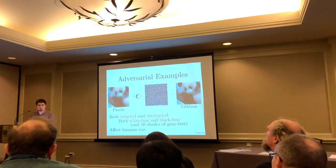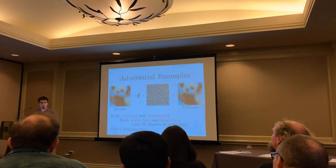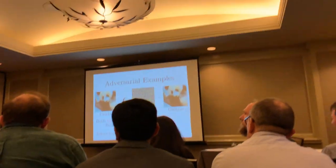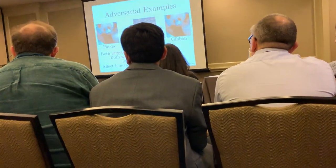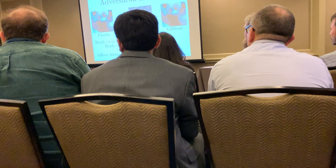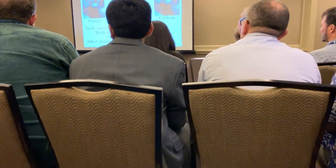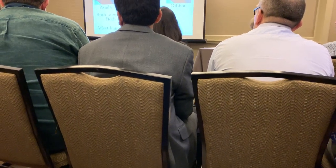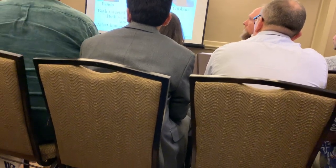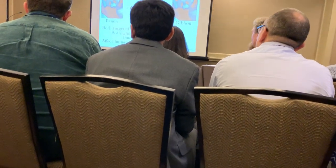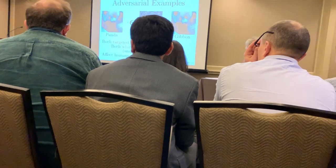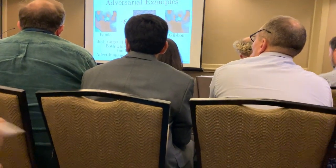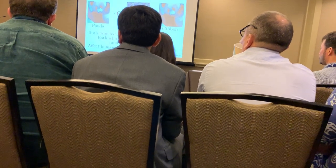There are several different kinds of adversarial examples. One way to categorize them is white box versus black box: white box examples are made with full knowledge of the model, black box examples are made without it. There are many shades of gray in between — attackers who can query the model but don't know its parameters, or who know or don't know the architecture or learning algorithm. Adversarial examples are even feasible with no access whatsoever to the model.